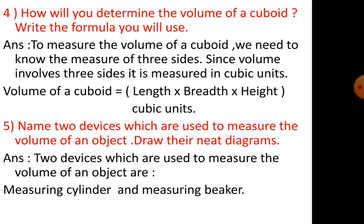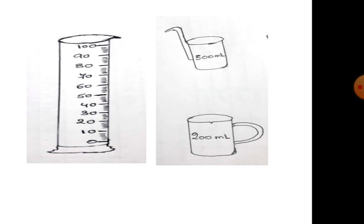Number 5. Name two devices which are used to measure the volume of an object. Draw their neat diagram. Two devices which are used to measure the volume of an object are measuring cylinder and measuring beaker. And you have to draw the diagram.